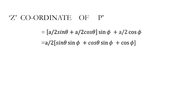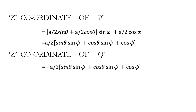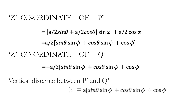Similarly, the coordinates of Q' are exactly the same but with a minus sign. The vertical height — the distance between P' and Q' — is therefore: h = a(sin θ·sin φ + cos θ·sin φ + cos φ).